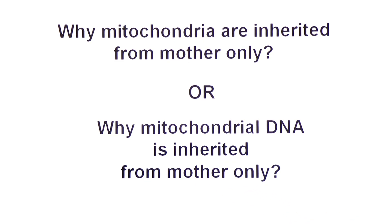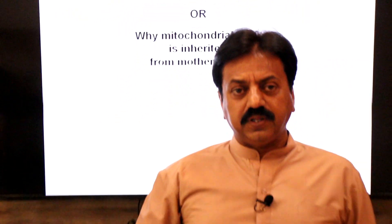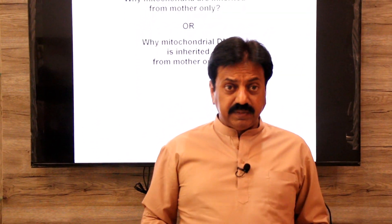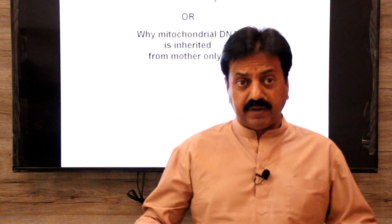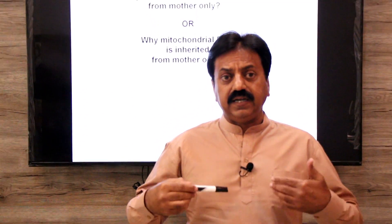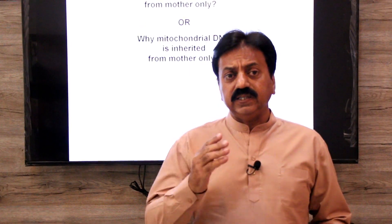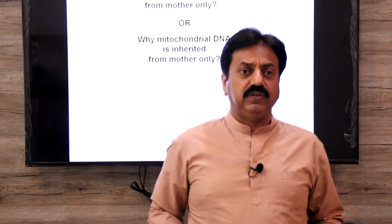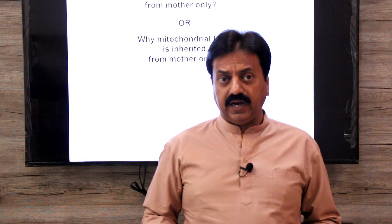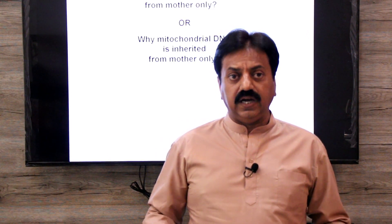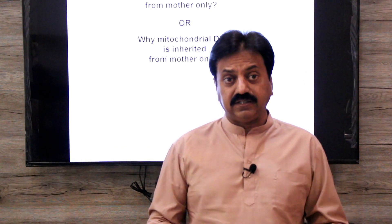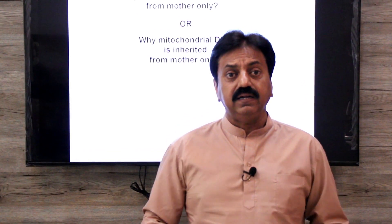You already know about the mitochondria structure. Mitochondria have their own DNA in the matrix. The DNA of mitochondria is inherited only from the mother. Today's topic is: why mitochondria and mitochondrial DNA are only passed to the offspring by their mother.